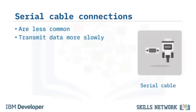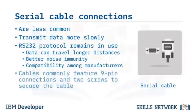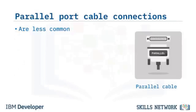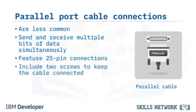RS-232, a recommended standard protocol, remains in use. RS-232 data signals can travel longer distances with better noise immunity and compatibility among manufacturers. RS-232 cables commonly feature 9-pin connections and two screws to secure the cable to the device and the computer. Parallel port connections are less common but do still exist. In many instances they have been replaced by USB and other connections. Parallel ports can send and receive multiple bits of data simultaneously, processing data faster than serial ports. Parallel port cables feature 25-pin connections and include two screws.